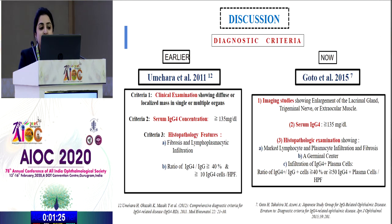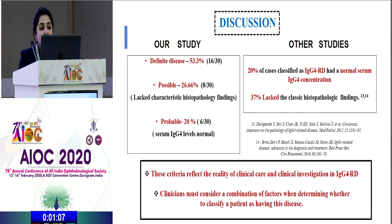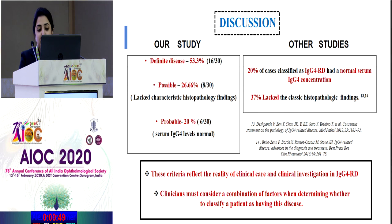Previously, we followed the Omehara et al. criteria, where clinical examination was a key finding and more than 10 IgG4 cells on histopathology were sufficient for diagnosis. We have now shifted to the Goto et al. criteria, which is more specific — imaging studies are given greater importance and IgG4 cells must exceed 50 per high-power field. In our study, typical histopathological findings were absent in 26% of cases, and serum IgG4 levels were normal in 20%, a pattern similar to other studies. This reflects the reality that clinicians must consider a combination of factors when classifying patients.